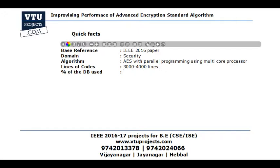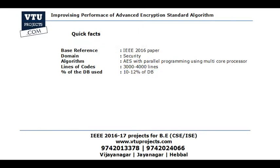The percentage of the database used: we are going to use a maximum of 10 to 12 percent of the DB. VTU allows a maximum of 20 percent database usage, and we are only using around 10 to 12 percent, so we are already on the safer side. After developing the project, we can prove that we have used only 10 to 12 percent of the database.